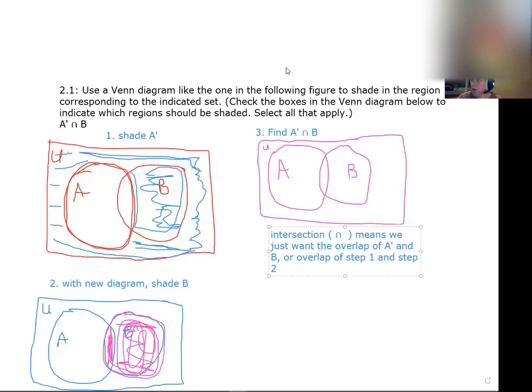So I'm going to take a new color orange and I'm going to look at my two pictures and see where I have shading in both pictures. So notice in picture one, the outside area is shaded, but it's not shaded in step two. So the outside area is not going to be shaded.